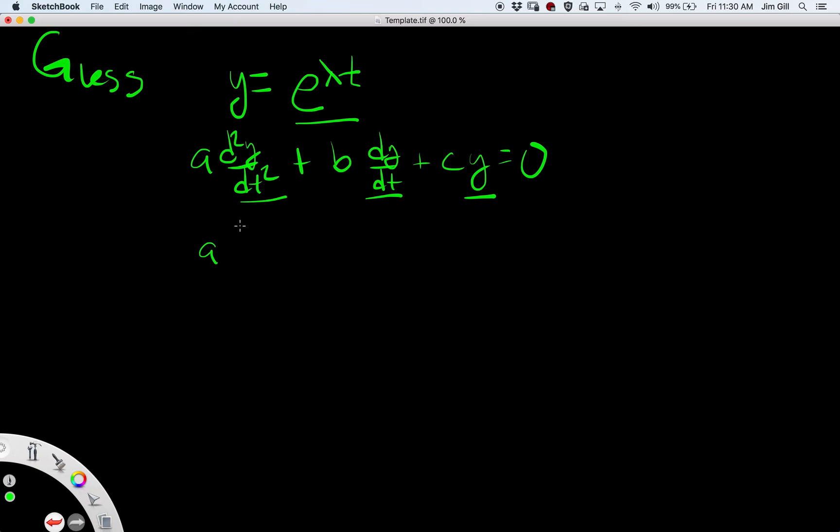So here we have a times lambda squared e to the lambda t plus b times the first derivative, which is lambda e to the lambda t, plus c times just plain old e to the lambda t equals zero. Now I know that I have an e to the lambda t in each term here so I can factor it out, and I have a lambda squared plus b lambda plus c equals zero.